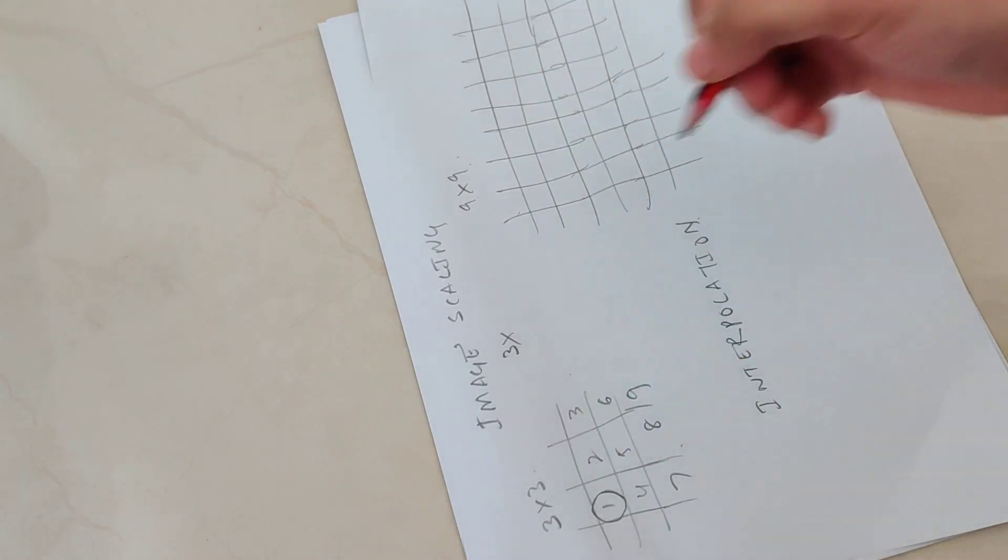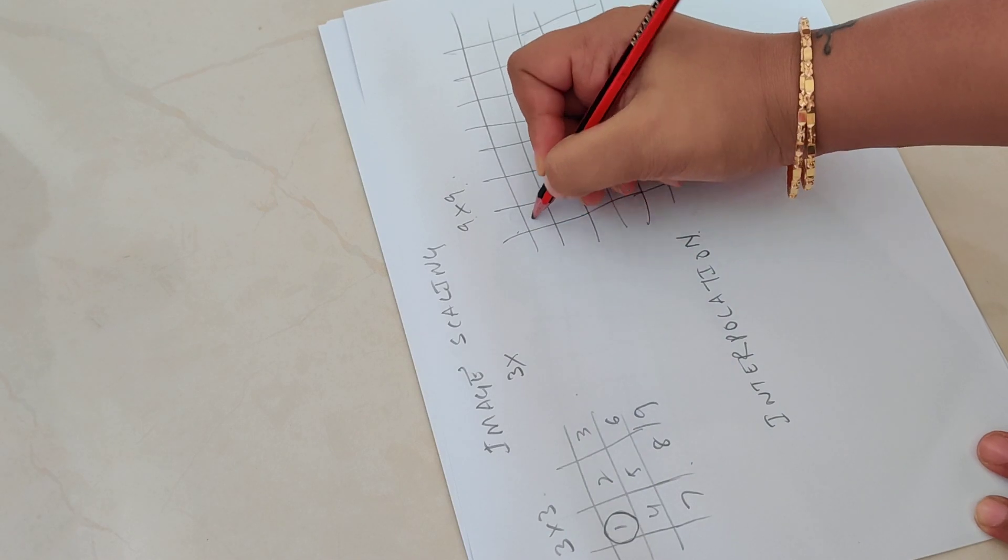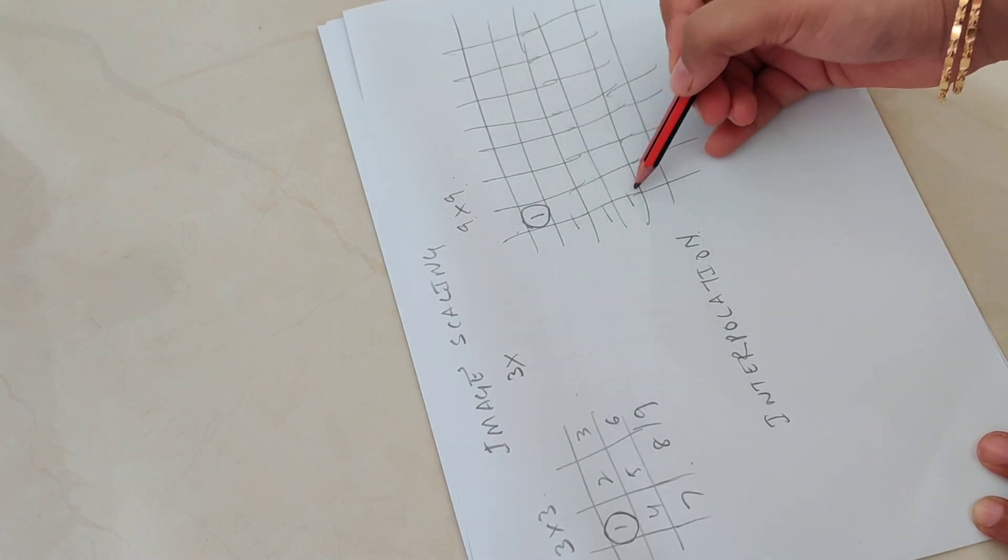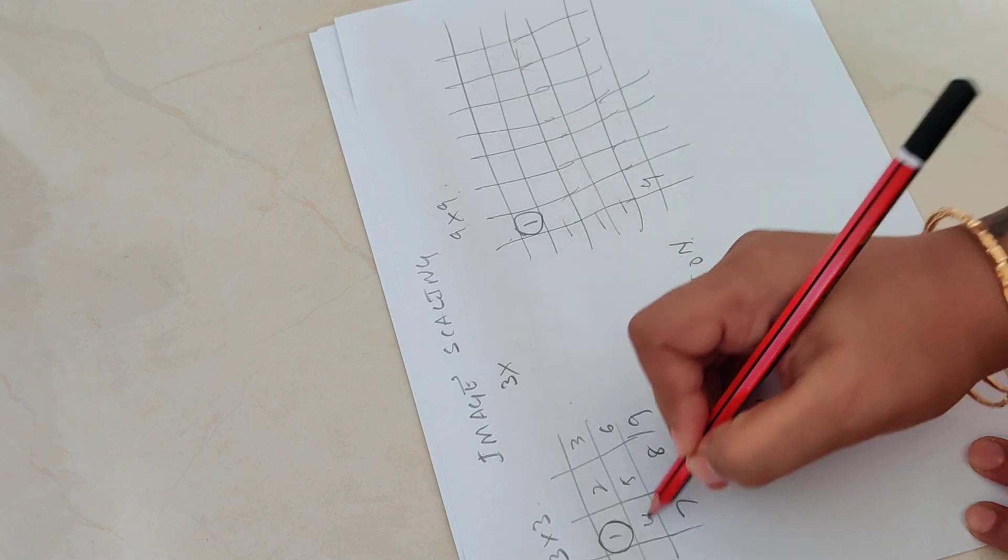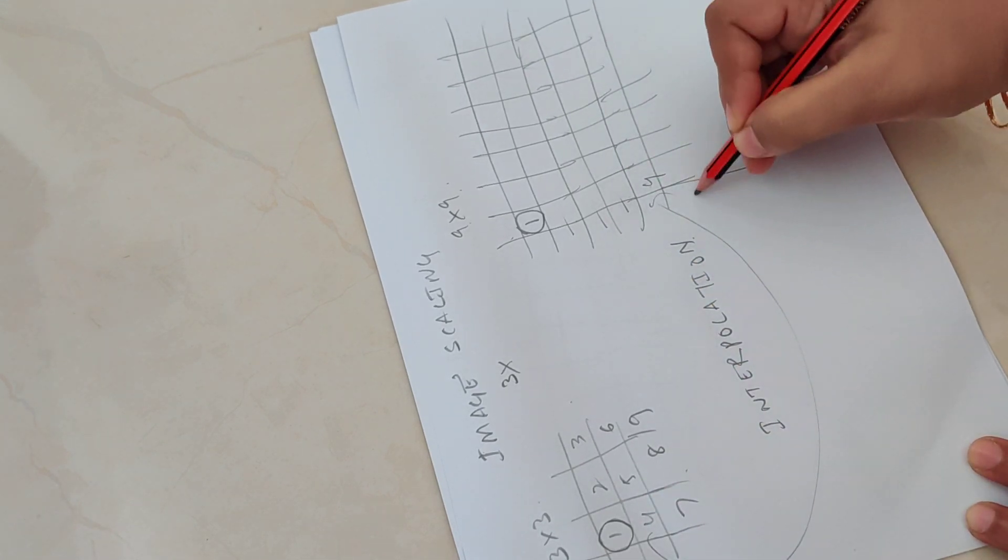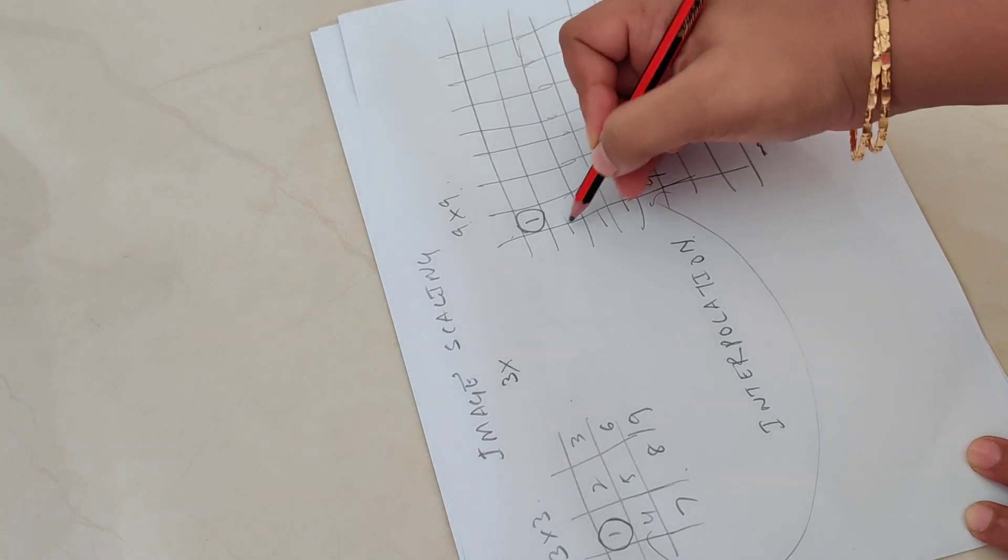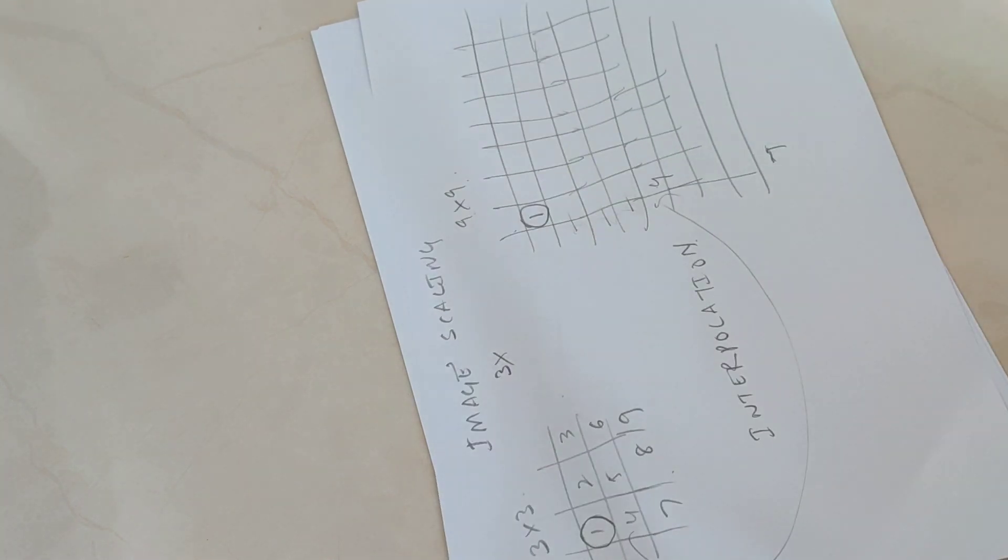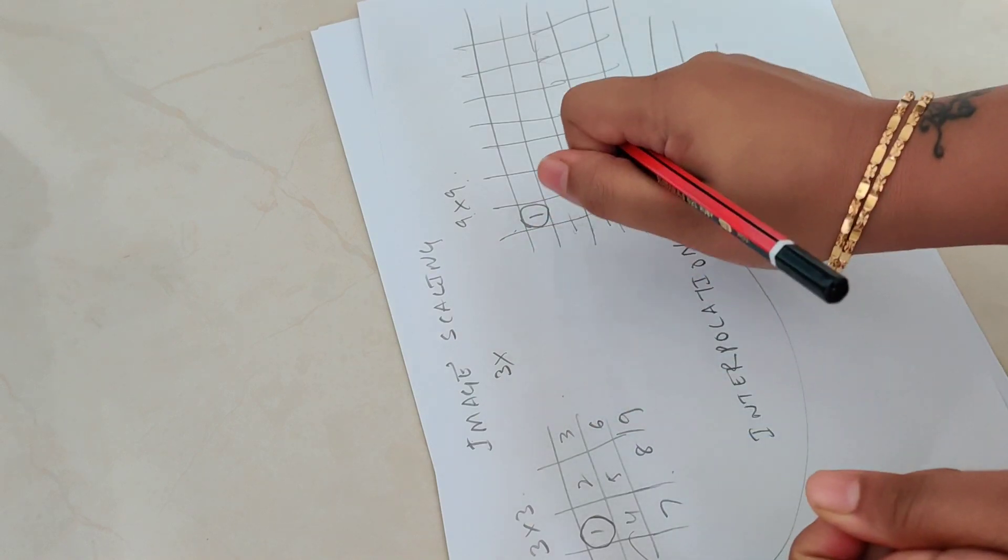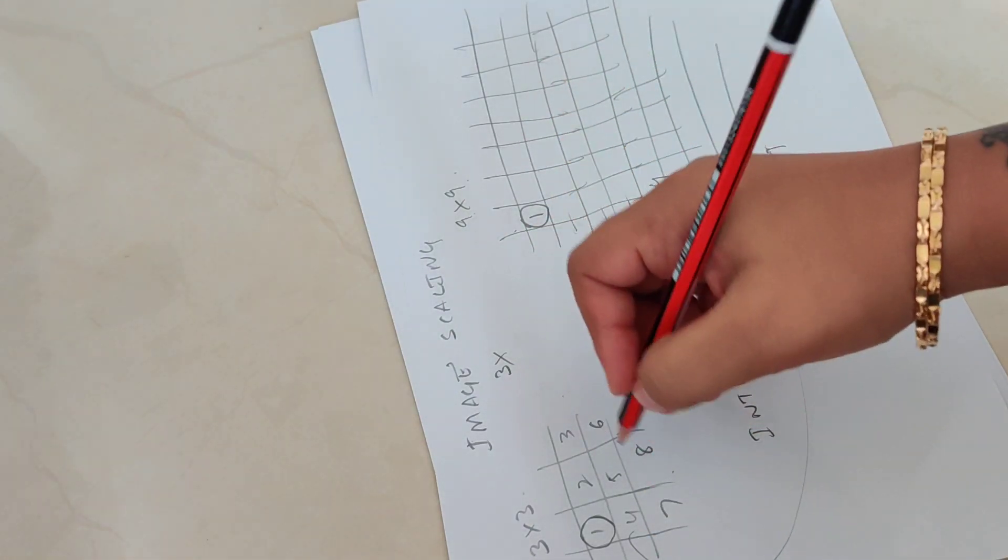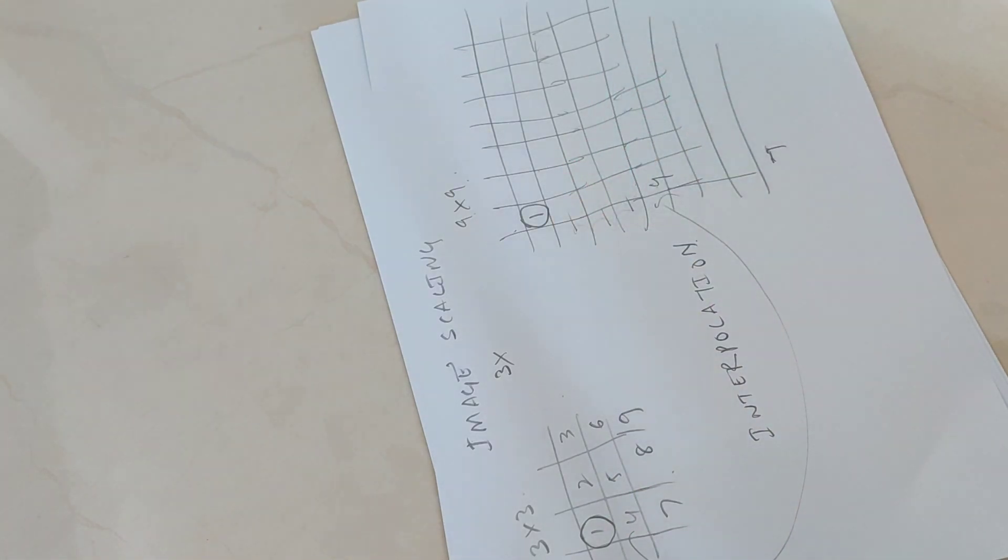The first guess that I come up with is I just place this value, the first pixel value here, I leave 3 gaps, I don't know what to fill in, and then I will put the next value. Again I will leave 3 gaps and then put the next value. I am just stretching this matrix but I don't know what values to put in. But this is a very bad estimation.